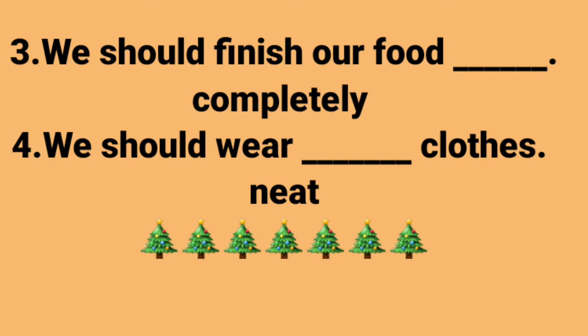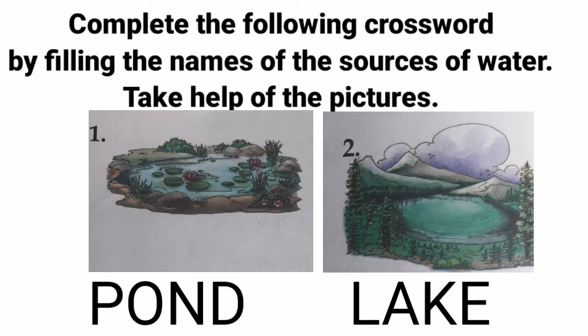Children, answer the following questions and fill in the blanks. Learn and write in your English copy. Page number 34: Complete the following crossword by filling in the names of the sources of water. Take help of the pictures. First picture: Pond — P-O-N-D. Pond.